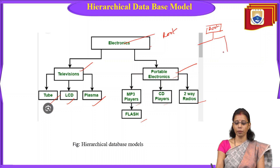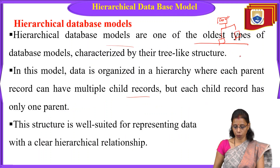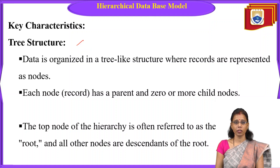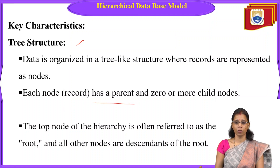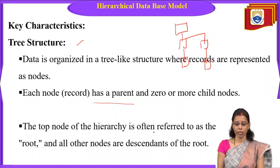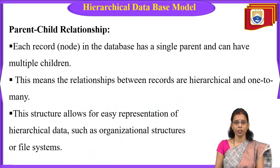This is called the hierarchical database model — the oldest type of model, maintained for many years. A key characteristic is the tree structure, where records are represented as nodes, and each node has a parent and zero or more child nodes. The top node of the hierarchy is referred to as the root, and all other nodes are descendants of the root. Each record — each node — in the database has a single parent but can have multiple children.